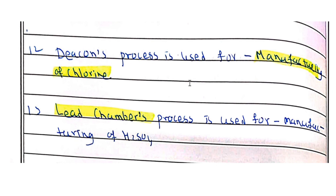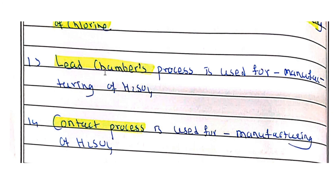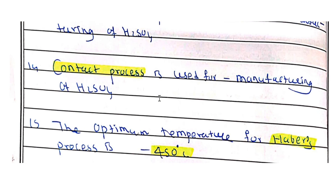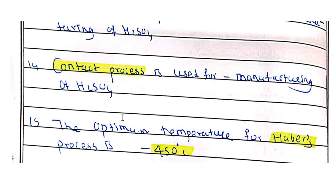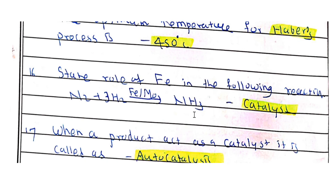The Deacon process is used for the manufacturing of chlorine gas, while the lead chamber process and the contact process are both used for the manufacturing of H2SO4. The optimum temperature for Haber's process is 450°C. Iron acts as the catalyst in Haber's process.